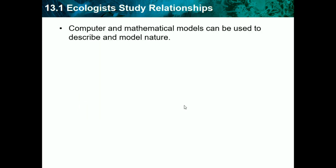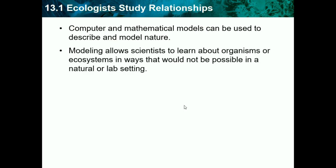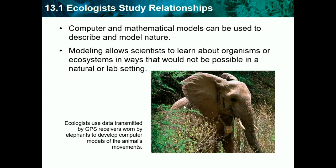Computer and mathematical models can be used to describe and simulate nature. Scientists record data of a certain species and then make a computer or mathematical model to simulate it and easily make predictions. Modeling allows scientists to learn about organisms or ecosystems in ways that would not be possible in a natural or lab setting. For example, ecologists use data transmitted by GPS receivers worn by elephants to develop computer models of the animals' movement — basically tracking where elephants migrate.